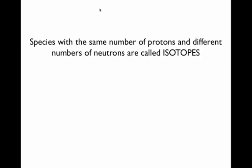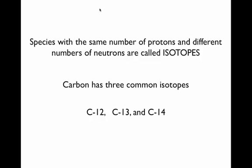Species that have the same number of protons and different numbers of neutrons are called isotopes. For example, carbon has three common isotopes: carbon-12, carbon-13, and carbon-14.